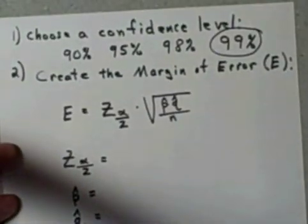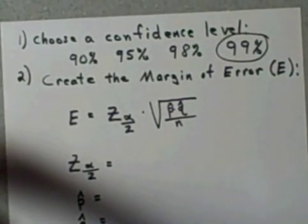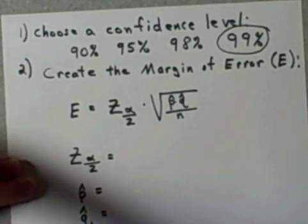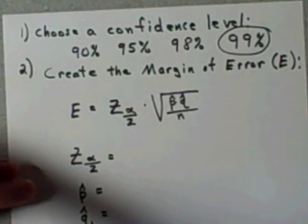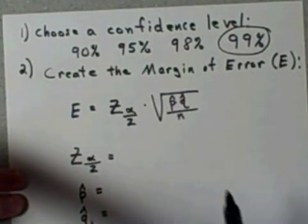Step number one was easy, we just decided that ourselves. Step number two takes a little more work but it's not that bad - we have to create the margin of error. The margin of error is going to lead us directly to the confidence interval. The margin of error, represented by E, is equal to the following formula.